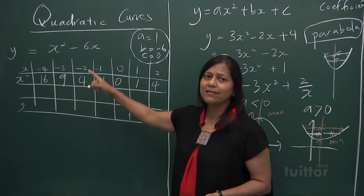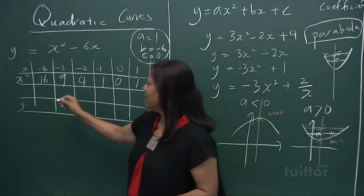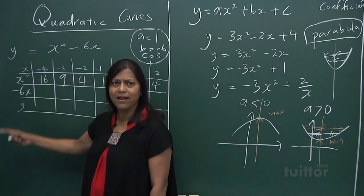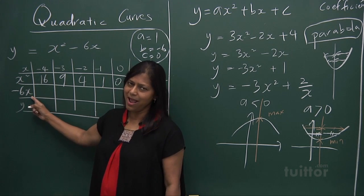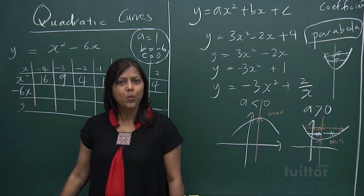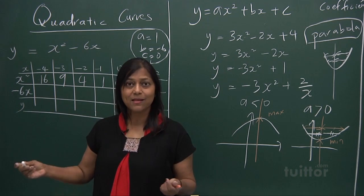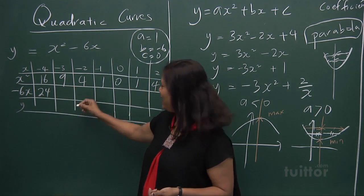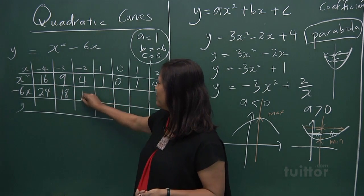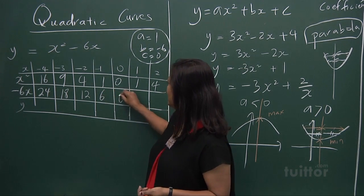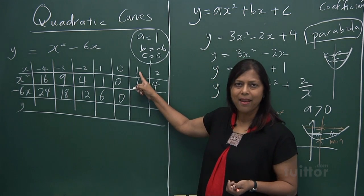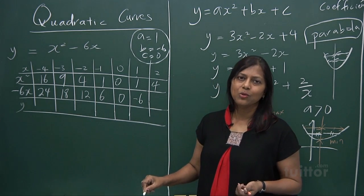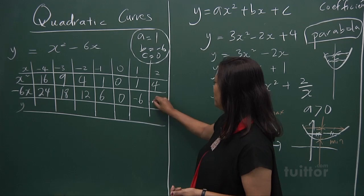The next part is to find what minus 6x is. Be very mindful of this little evil: the minus sign — this is where careless mistakes arise. You have minus 6 multiplied by each x value. Minus 6 times minus 4: minus times minus is a plus, so you get 24. Minus 6 times minus 3 is 18. Minus 6 times minus 2 is 12. Minus 6 times minus 1 is 6. Then 0. Minus 6 times plus 1 is minus 6. Minus 6 times plus 2 is minus 12.